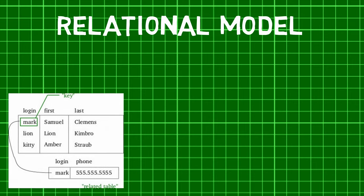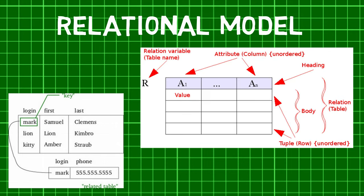In a traditional relational data model, relations are saved in the format of tables. A table has rows and columns, where rows represent records and columns represent the attributes. A single row of a table, which contains a single record for that relation, is called a tuple.